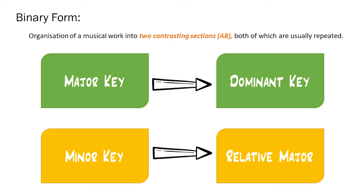In binary form, we expect the harmony of each section to move one of two ways. If we begin the A section in the major, the B section is normally in the dominant. If we begin the A section in the minor, the B section is normally in the relative major. We're going to take a look at the following example.